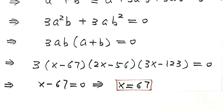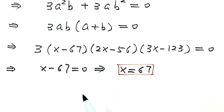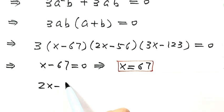So now let's set the second factor equal to zero. Then 2x minus 56 equals zero. Solve for x. x equals 28.